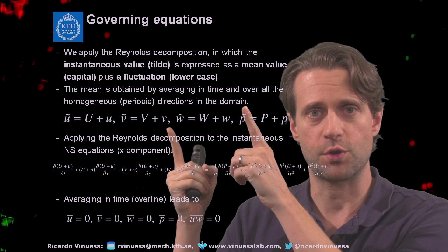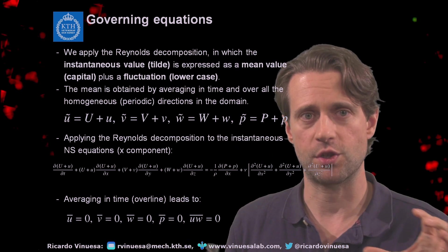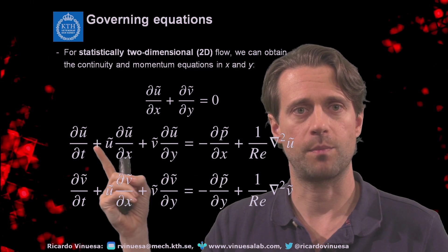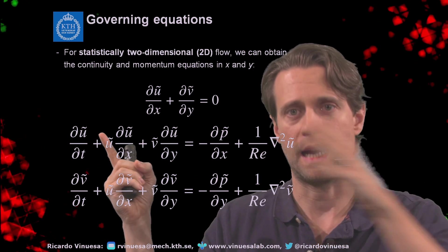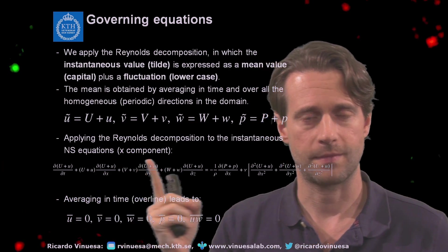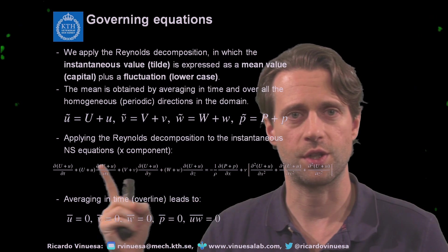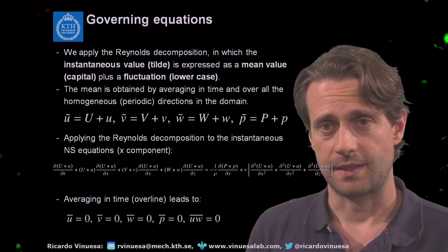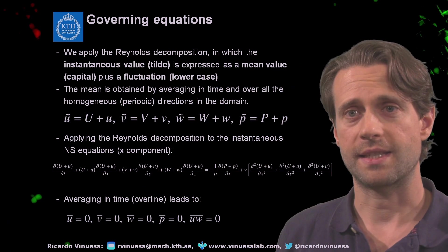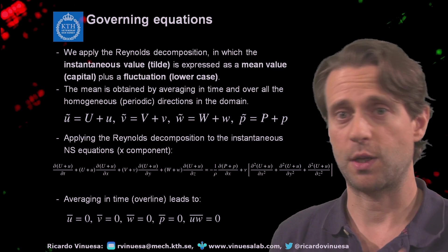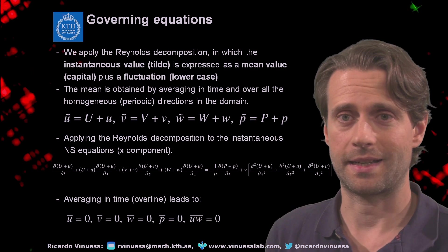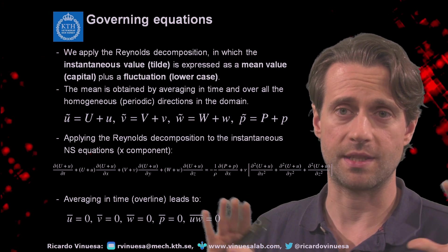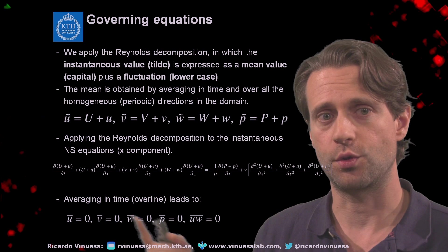So we can apply it for the streamwise fluctuations, the wall-normal, the spanwise, and for the pressure. We can apply this Reynolds decomposition to the instantaneous governing equations. If we plug this decomposition into the x-momentum equation — just to illustrate — I replace ũ = U + u' and so on, ending up with the full decomposed equation. What we can do then is average in time, denoted by an overline. Note that this average in time is also extended to average in periodic directions.